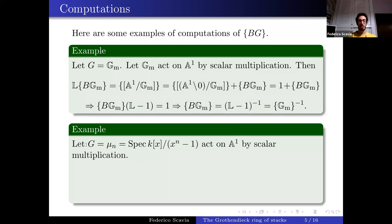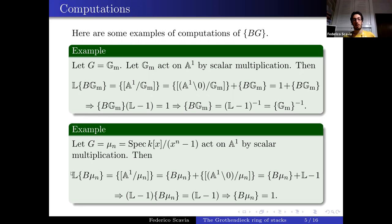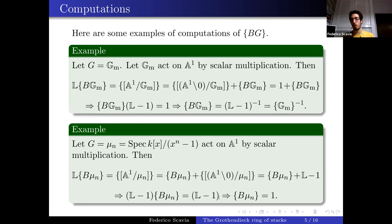For the finite case, take G = μn, the group scheme Spec(k[x]/(x^n − 1)). Over an algebraically closed field this is just Z/nZ. We let μn act on A1 by scalar multiplication and do the same computation: L · Bμn = [A1/μn]. The closed piece gives Bμn and the open complement gives [Gm/μn] = Gm, so we get Bμn + (L − 1). Rearranging: (L−1) · Bμn = (L−1). Since L−1 is invertible, we can cancel it and get the class of Bμn = 1.